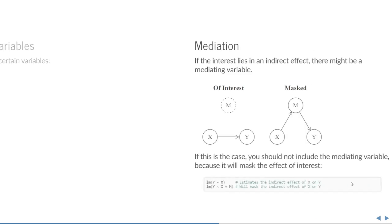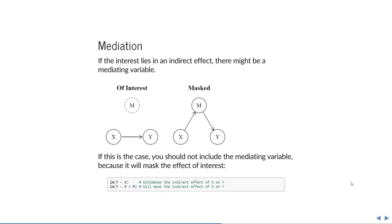The next reason not to include certain variables is mediation. If the interest lies in an indirect effect, it might be mediated by another variable M. If you're interested in the indirect effect of X on Y, you shouldn't include M, because it will mask the effect and the model will say there's no relationship between X and Y. Including a variable that opens up a causal path for another variable can mask an effect of interest.